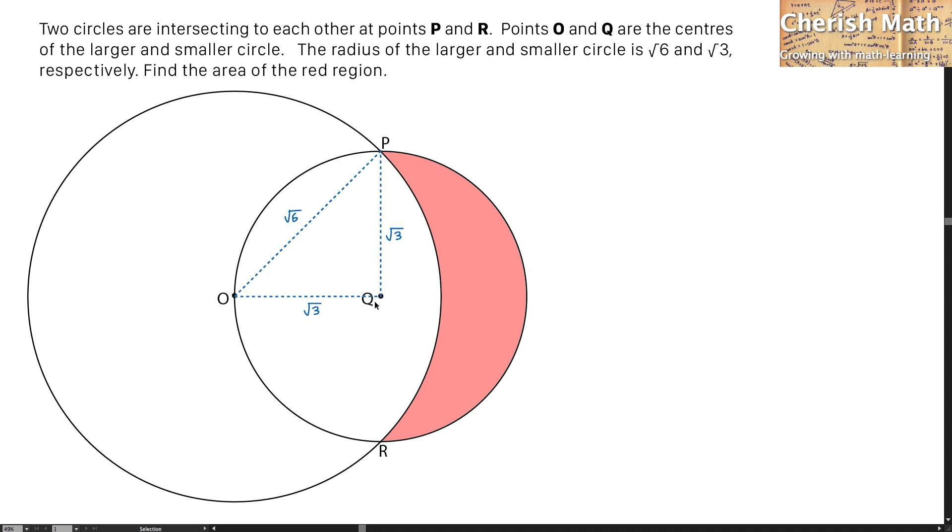The lines OQ and QP are the radius of the smaller circle, measuring √3. The line OP is the radius of the larger circle and measures √6.